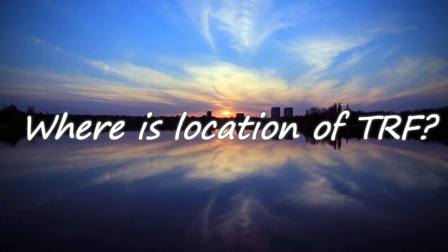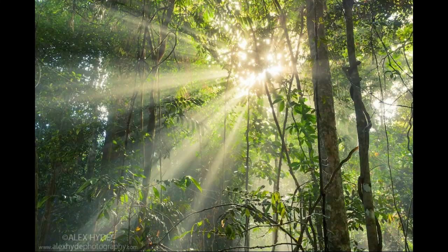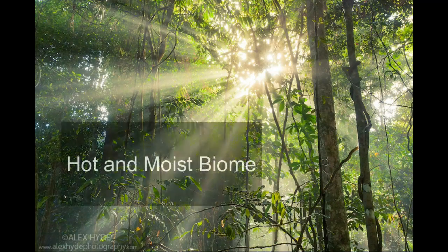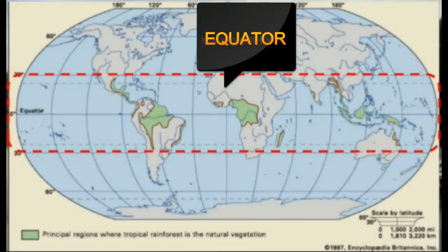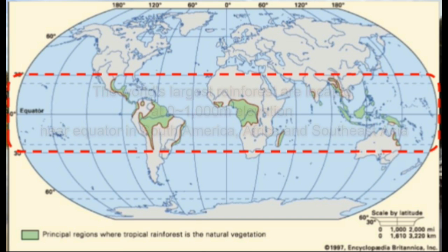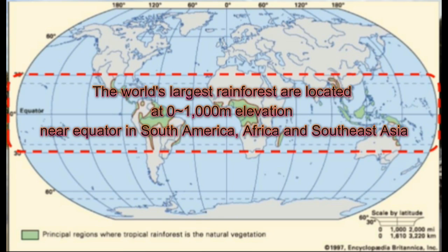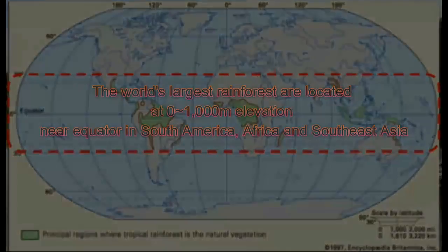So where is the location of Tropical Rainforest? Tropical Rainforest is a hot, moist biome found near the Earth's equator, from the equator to 10 degrees or 25 degrees north and south of latitude. The world's largest tropical rainforests are located at 0 to 100 meter elevation near the equator in South America, Africa and Southeast Asia.